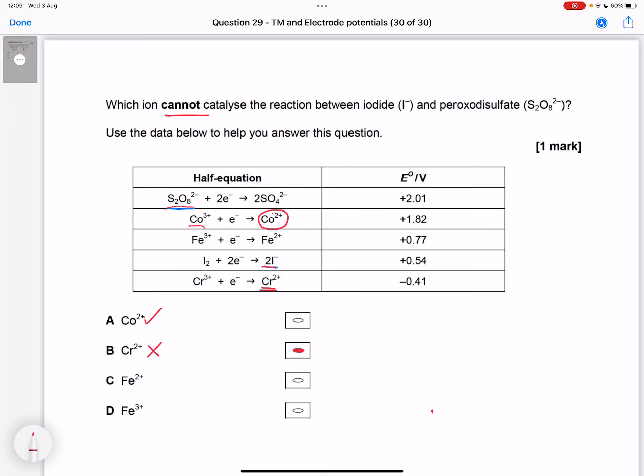So the answer is going to be chromium 2+, but let's just double check the others. For Fe²⁺ in between, what we're really looking for is anything that would catalyze these two processes would be from in between them, and they can go in either order, the reactions.